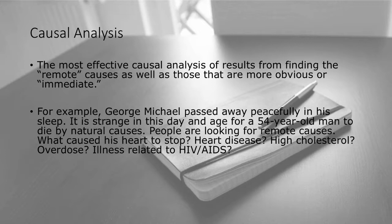For example, George Michael passed away peacefully in his sleep. It's strange in this day and age for a 54-year-old man to die by natural causes, so people were looking for remote causes. And sometimes in the search for remote causes, this is where people start getting some crazy theories. What would cause an otherwise healthy 54-year-old man's heart to stop? Could it be heart disease, high cholesterol, was it some type of overdose as a result of chronic drug use, or could it have been related to something having to do with HIV or AIDS?